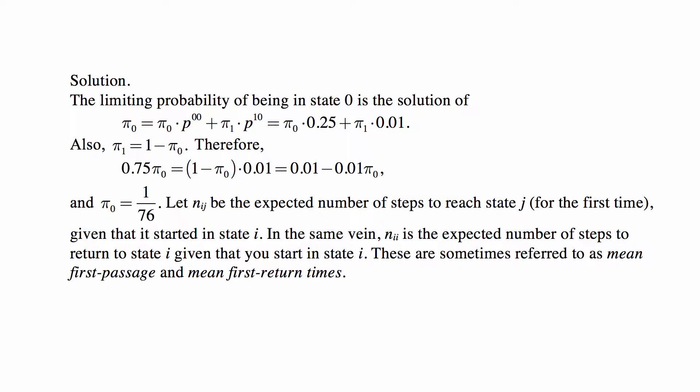Also the second equation is that π₁ = 1 - π₀. Therefore, 0.75π₀ = (1-π₀)·0.01 = 0.01 - 0.01π₀, and 0.76π₀ = 0.01, and π₀ = 1/76.